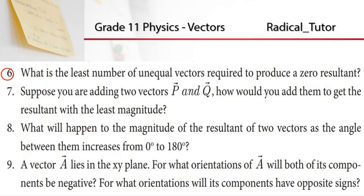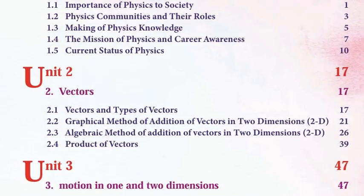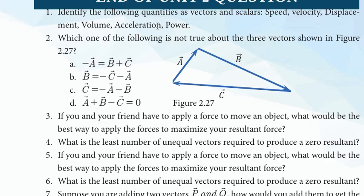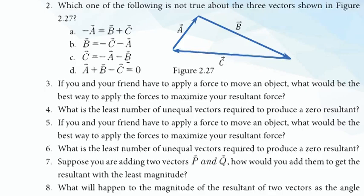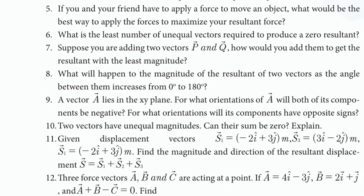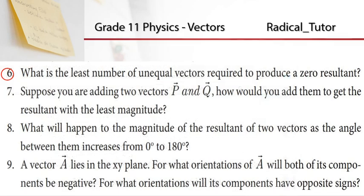I'm going to talk about Unit 2. Question number 6: What is the least number of unequal vectors required to produce a zero resultant?